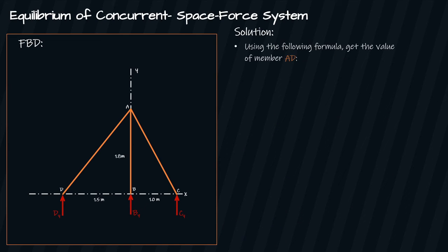Using the following formula, get the value of member AD. Substitute the value that we have. Dy times 2.6 equals to negative 2267.72 kilonewtons.